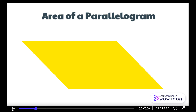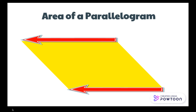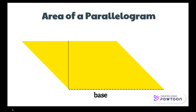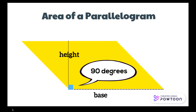This shape is a parallelogram because the bottom length is parallel to the top and the right side is parallel to the left. The bottom length is called the base. From the corner of the base, go straight up to the top. The base and height meet together, forming a right angle — 90 degrees.